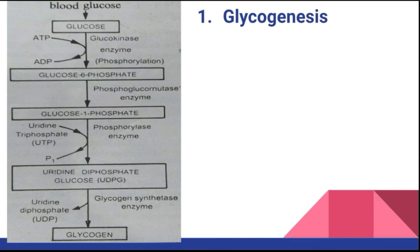A large amount of glucose taken during feeding is stored in the form of glycogen in the liver and muscle cells. The conversion of glucose into glycogen and its storage in the liver and muscle cells is the total process called glycogenesis.